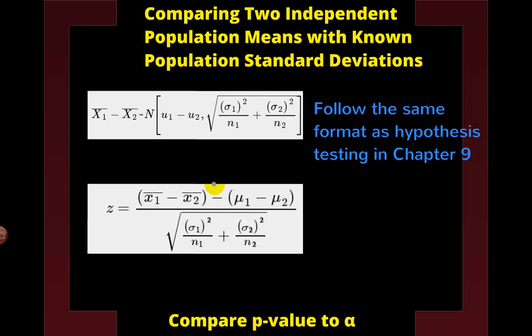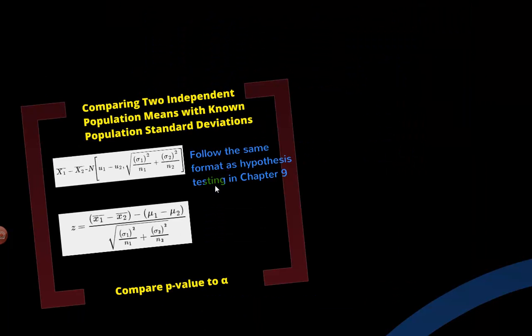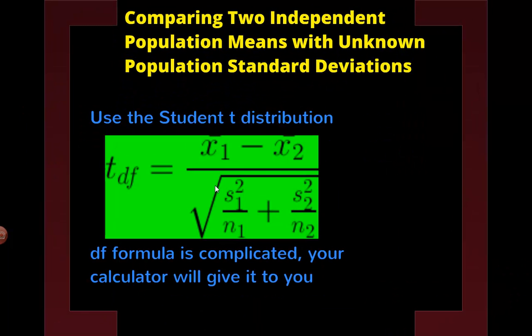If we do not know the population standard deviation, we still use the t-test, the t-distribution. So that part hasn't changed. The part that has changed is that we can't just write down what the degrees of freedom are because there's a formula that goes into it and has lots of parts to it. So we just kind of ignore it and we let the calculator give it to us at the end.